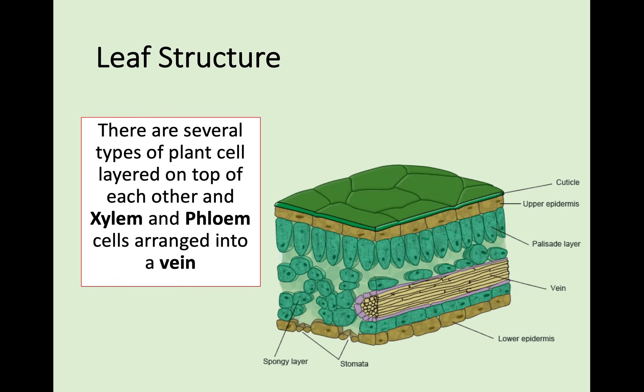The next part is leaf structure. Looking at this diagram, on the bottom right-hand corner there's a yellow and purple tube going through the leaf called a vein - just like veins in the human body. Veins in leaves are the xylem and phloem cells arranged together, so you can clearly see them. If asked what is in the vein, it's xylem and phloem cells put together.